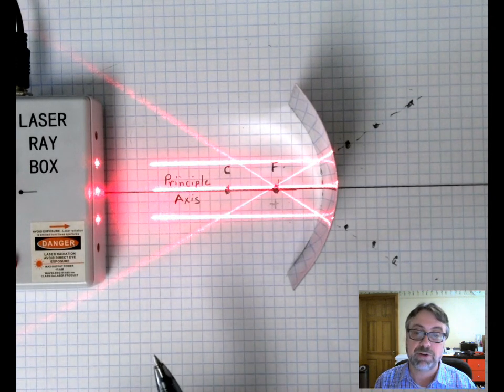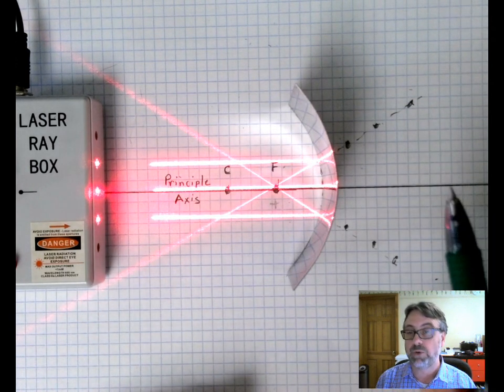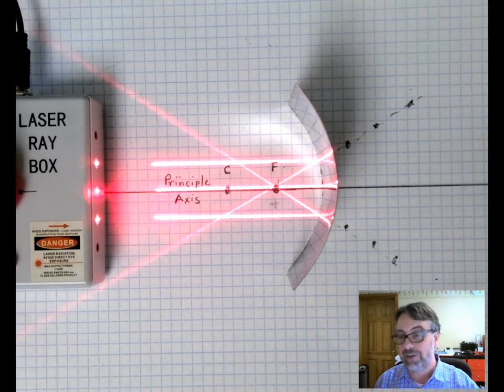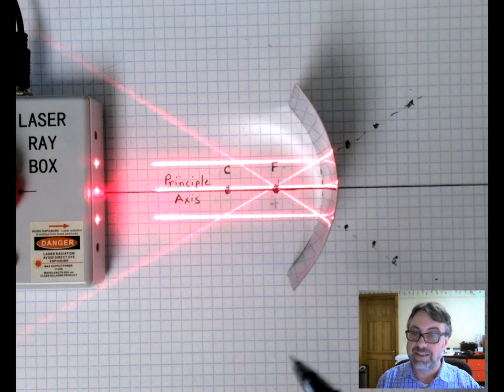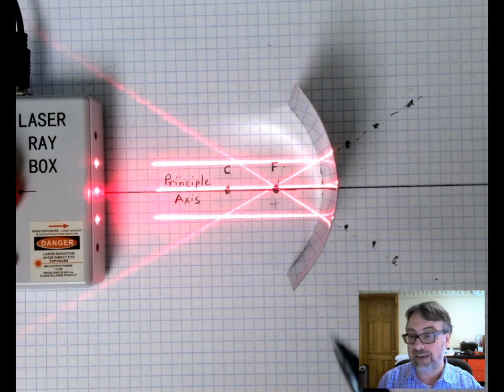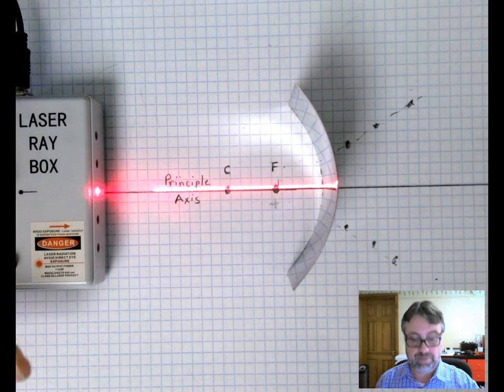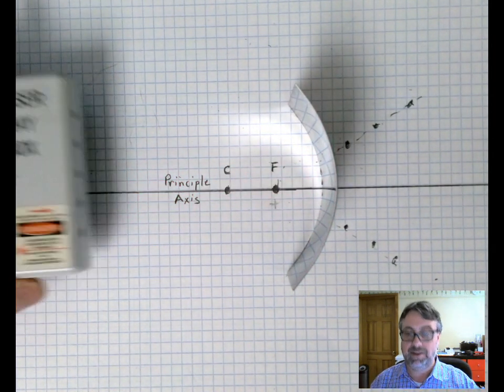The nice thing about this mirror though is it's reflective on both sides. So what I'm going to do is move the ray box to the other side of the mirror. In this configuration the mirror is acting as a concave mirror, but let me slide this over.